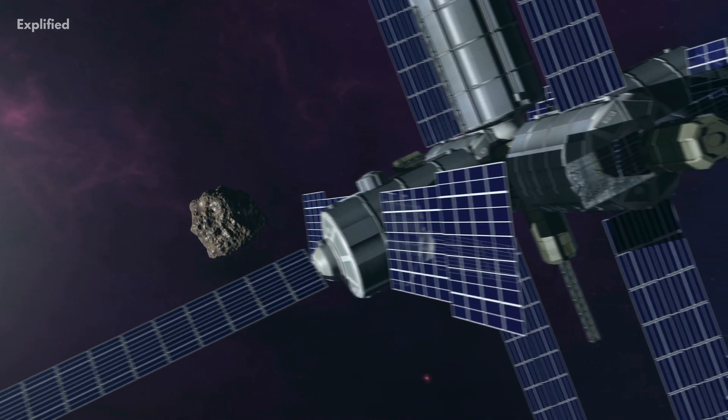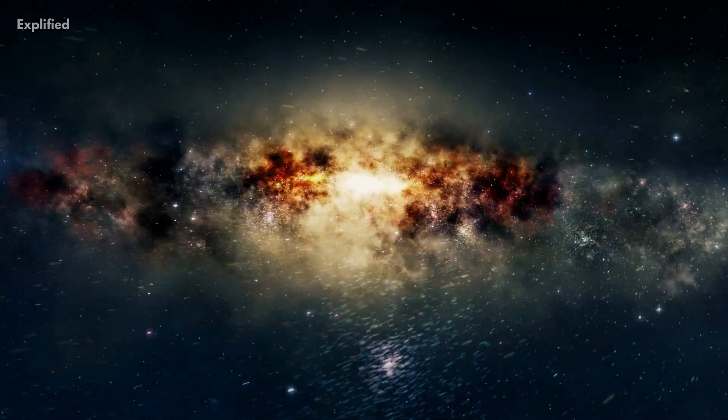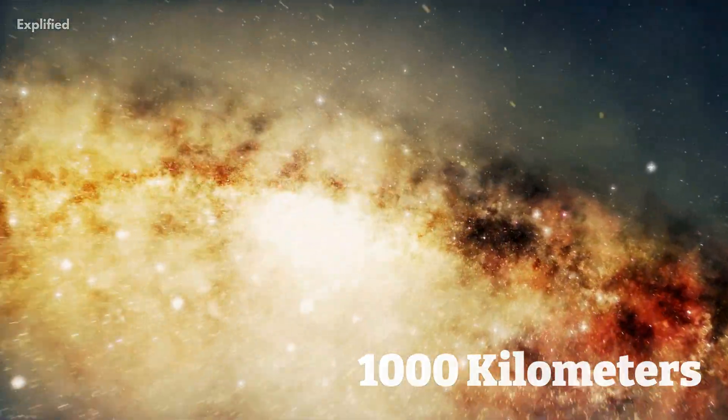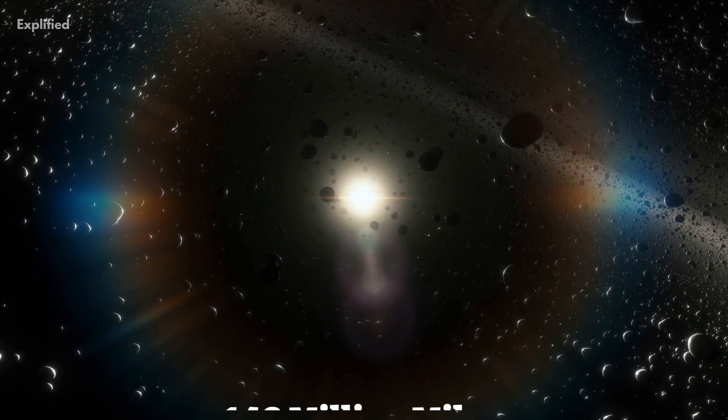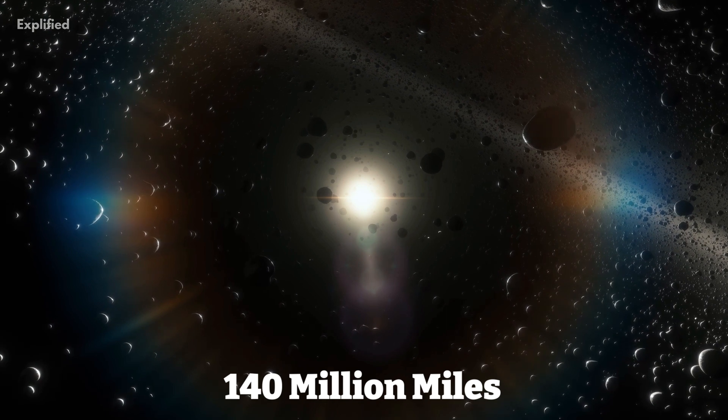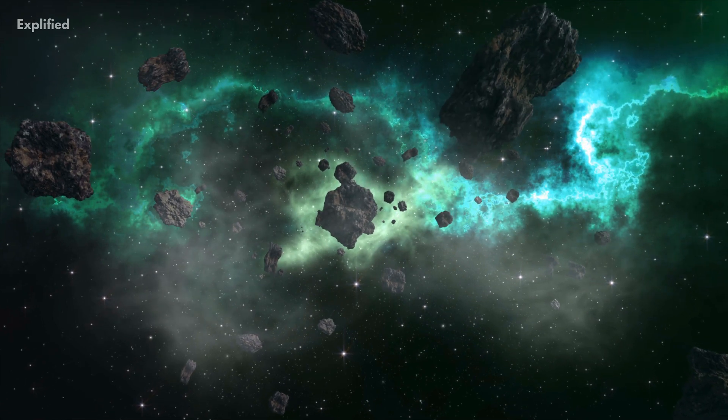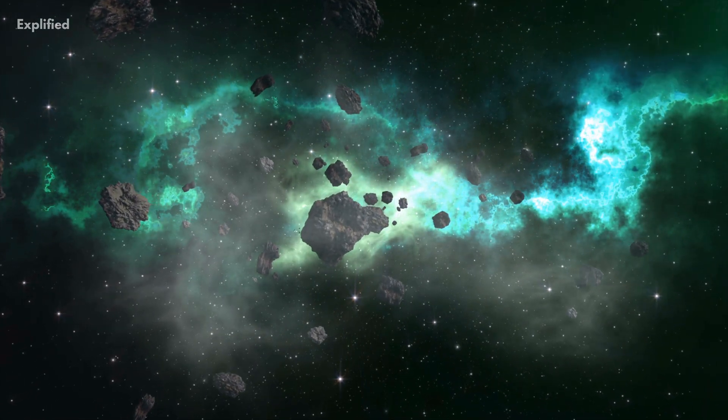The size of the asteroids present in the asteroid belt ranges from the size of a small dust particle to 1,000 km wide. A region measuring about 140 million miles across is covered by the main belt, which is located between Mars and Jupiter at a distance of two to four times that of the Sun.